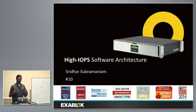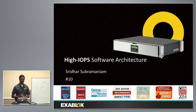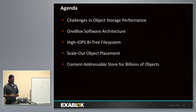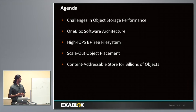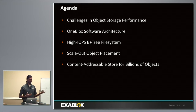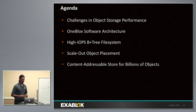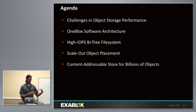I'm going to talk about how we're taking this notion of object storage and a file system on top of object storage and evolving this design to high IOPS environments — high IOPS use cases — and taking advantage of the SSD IOPS potential in the 5210. First we're going to look at some challenges in object storage performance, then the OneBlock software architecture from a performance perspective, then our high IOPS B+3 file system, scale-out object placement, and finally the content-addressable stores which allow us to store billions of objects on each disk drive.